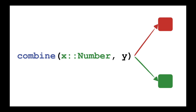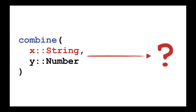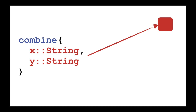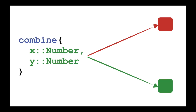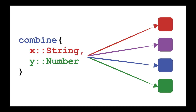In object-oriented programming you would do this with inheritance and polymorphism. But there's a fly in the ointment: maybe we want multiple implementations based on more than one argument — a String and a Number, or both Strings, or both Numbers. These two arguments is where the 'multiple' comes from in multiple dispatch. In Julia we can build implementations covering all these type combinations.